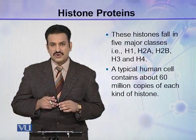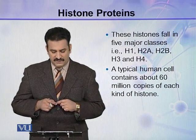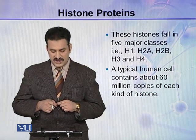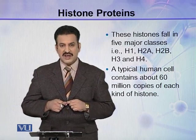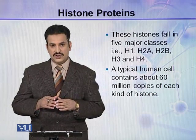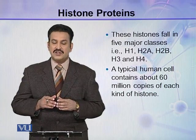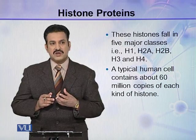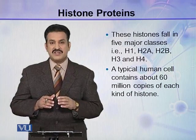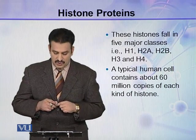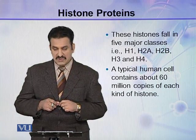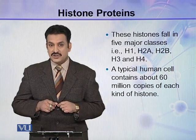These nine molecules of histones fall in five major classes: H1, H2A, H2B, H3, and H4. So these five types of histones are present in the chromatin, and these five types of proteins, which are nine in number, are present in a single nucleosome. A typical human cell contains about 60 million copies of each kind of histone.